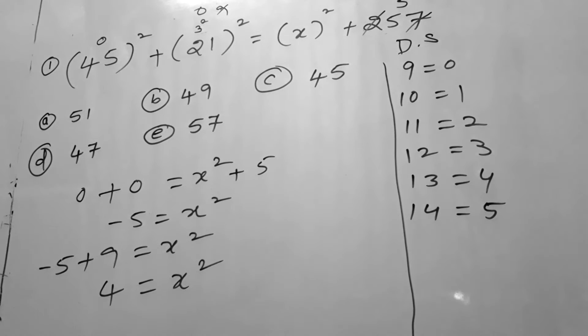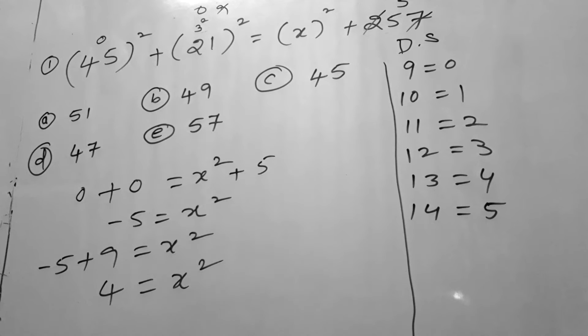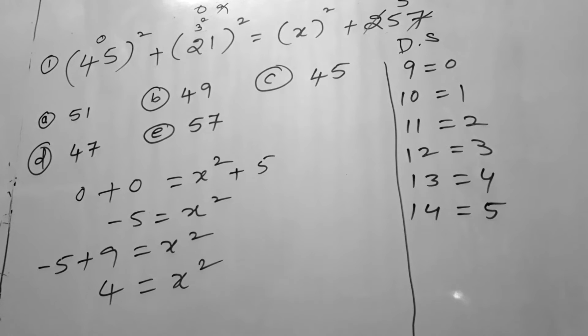x square value is nothing but 4. Looking at the answer options alone, the one with digital sum 4, that's the right option.